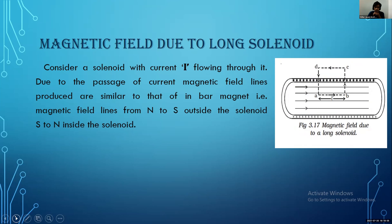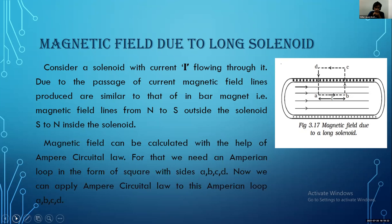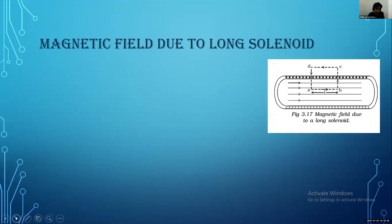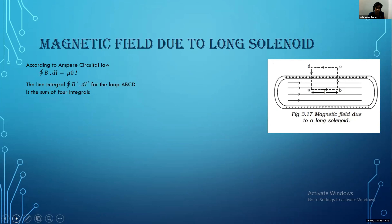Magnetic field due to a long solenoid. First, we consider a solenoid with current I flowing through it. When current passes through the solenoid, a magnetic field is produced. The magnetic field lines are similar to that of a bar magnet — inside the magnet the field lines go from south to north, and outside from north to south. To calculate the magnetic field, we use Ampere's Circuital Law, for which we need an Amperian loop in the form of a square or rectangle with sides ABCD.